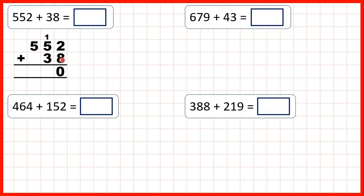Because we've added our ones, we move on to our tens column. We have 1 plus 5 plus 3, that makes 9. And now we move on to our hundreds, and we have 5 plus nothing, so we have 5. That gives us an answer of 590.